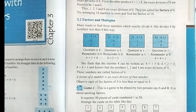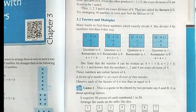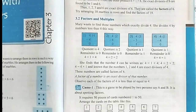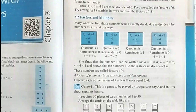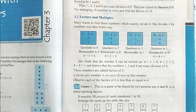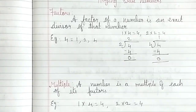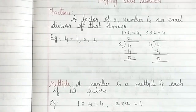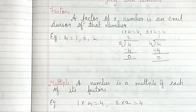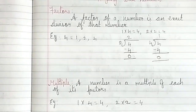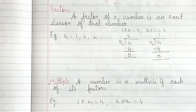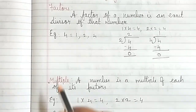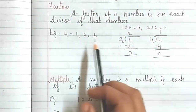In your previous class we have learnt about Factors. So here they have given a definition. What is a factor, children? A factor of a number is an exact divisor of that number. For example, factor of 4: 4 ones are 4, 2 twos are 4.